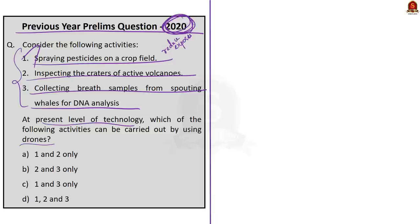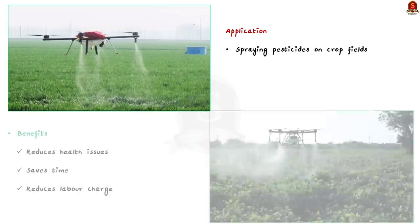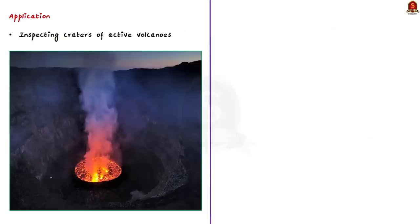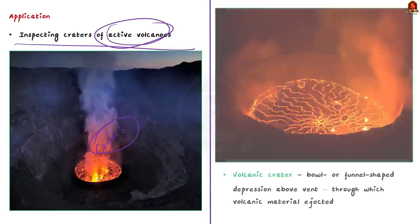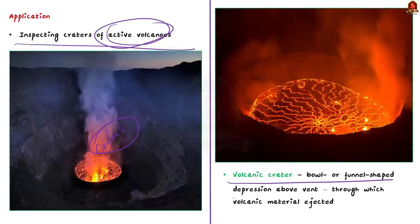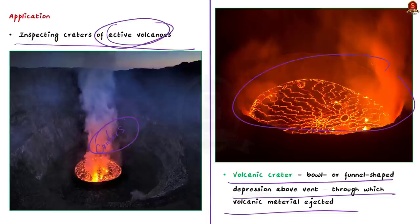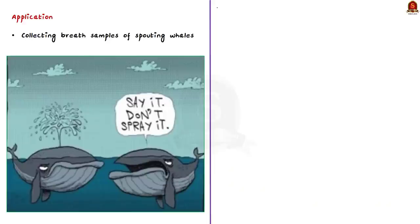The second statement is also correct because only drones can be used to study or inspect the craters of active volcanoes — this cannot be done by humans. A volcano crater is a bowl or funnel-shaped depression that usually lies directly above the vent from which volcanic material is ejected. Drones can be controlled remotely, which comes in very handy in situations like this.